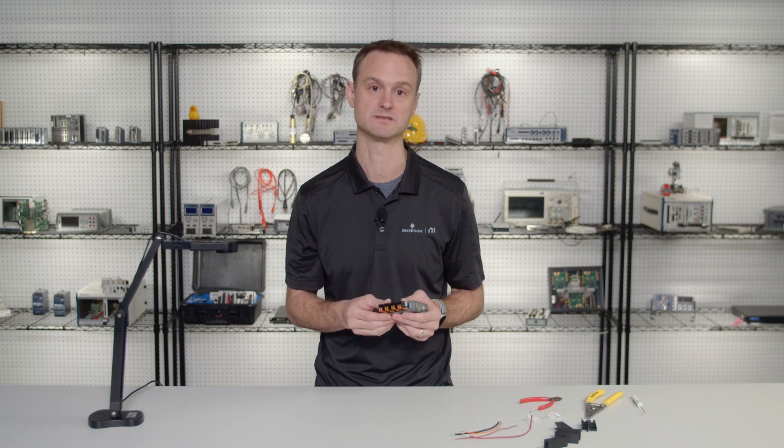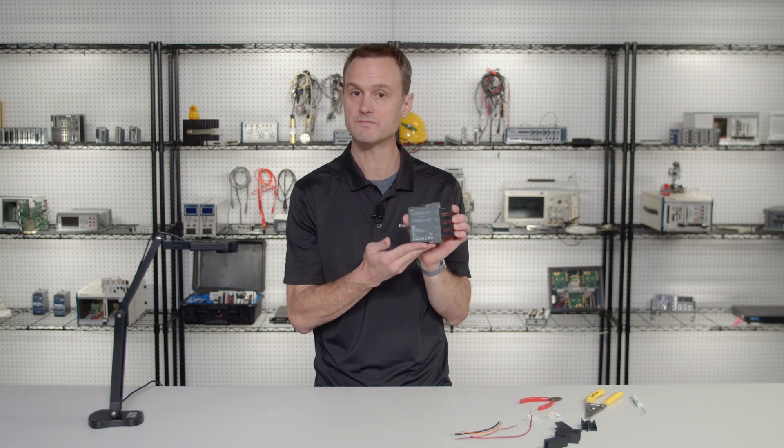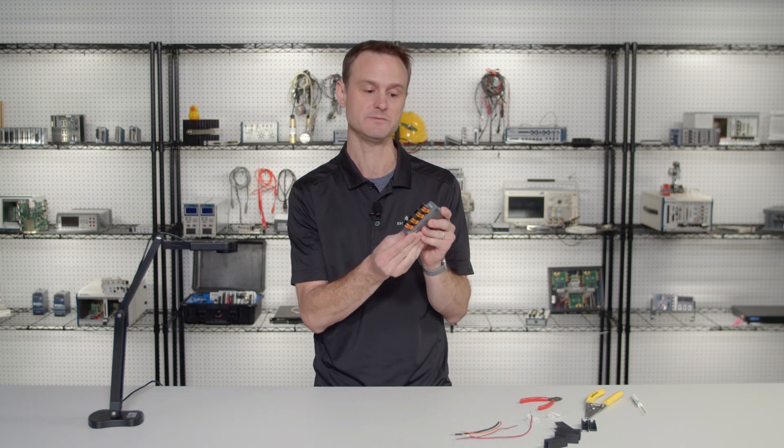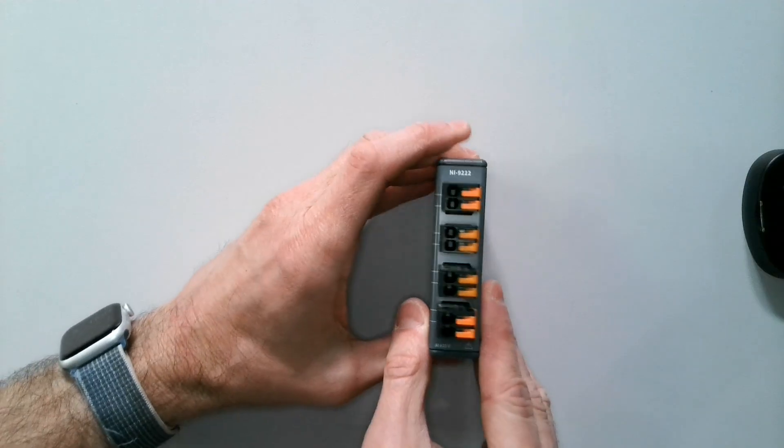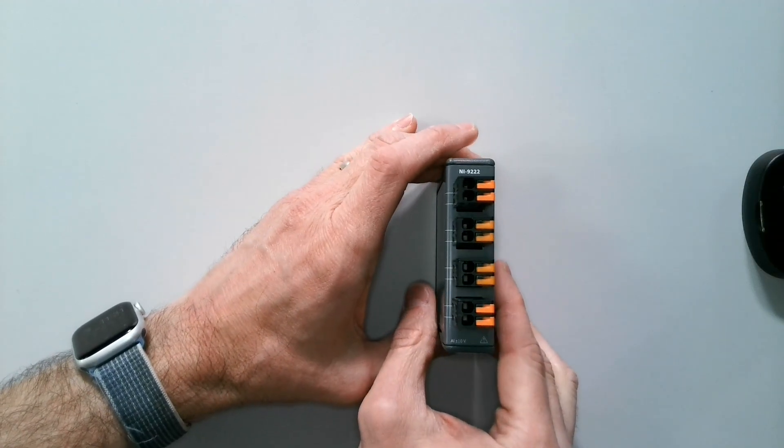I think this is the fastest and easiest way to connect a sensor to a compact DAC or a compact RIO system. Here's one of the modules with a snap-in style connector. The connector is part of the module so different connectors have different part numbers.